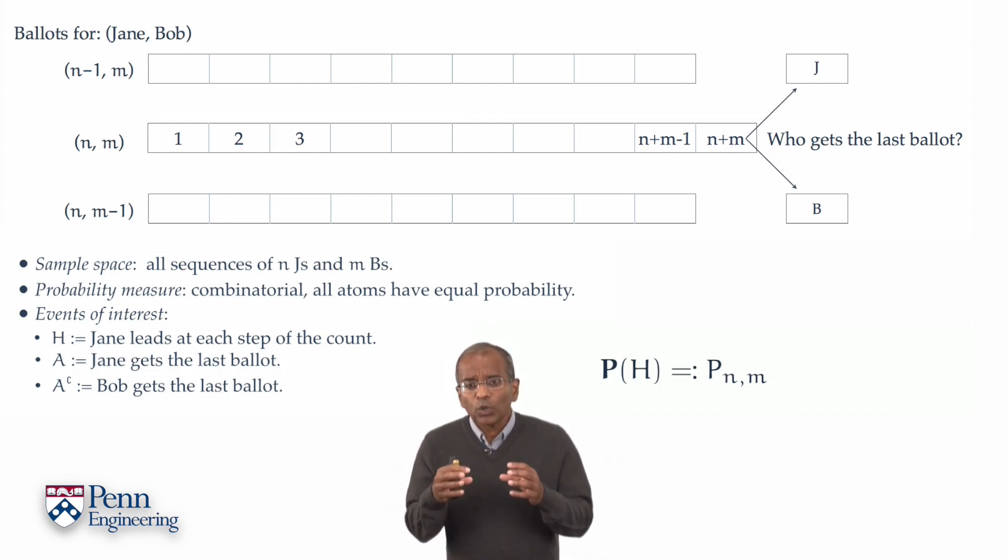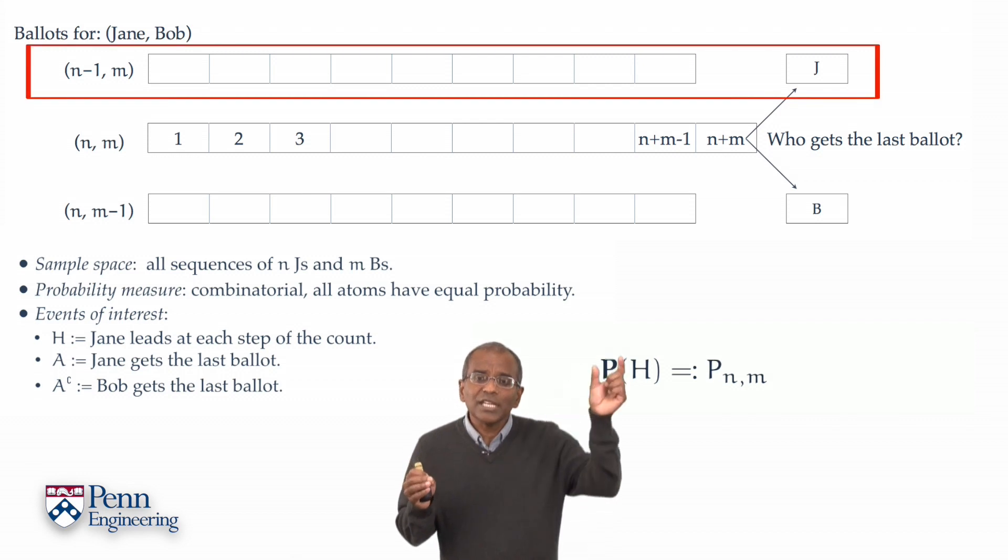Now, let us see what we can say given this choice of notation for the conditional probability that Jane leads at every step of the count, given that she gets the last ballot. Once Jane gets the last ballot, there are n plus m minus 1 ballots remaining. She gets n minus 1 of those. Bob gets m of those.